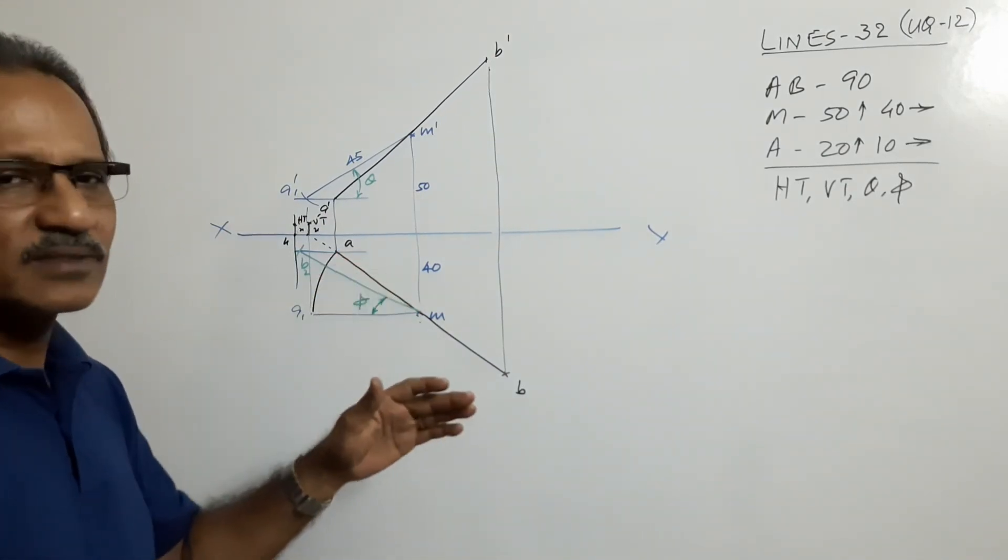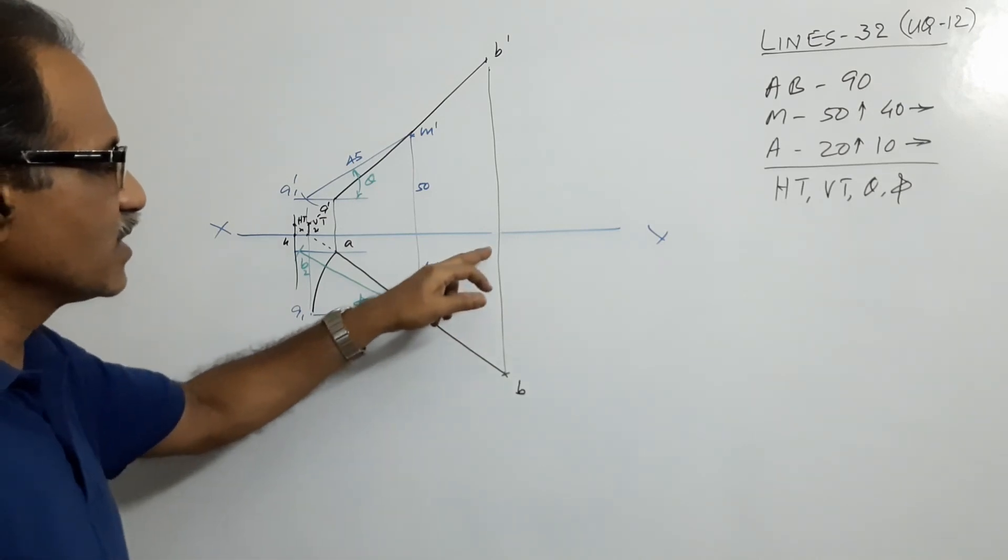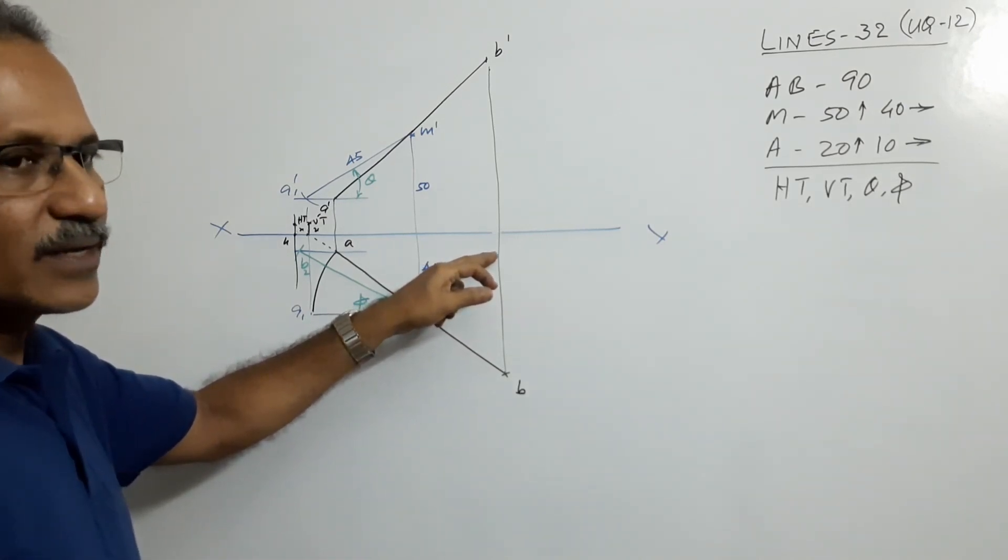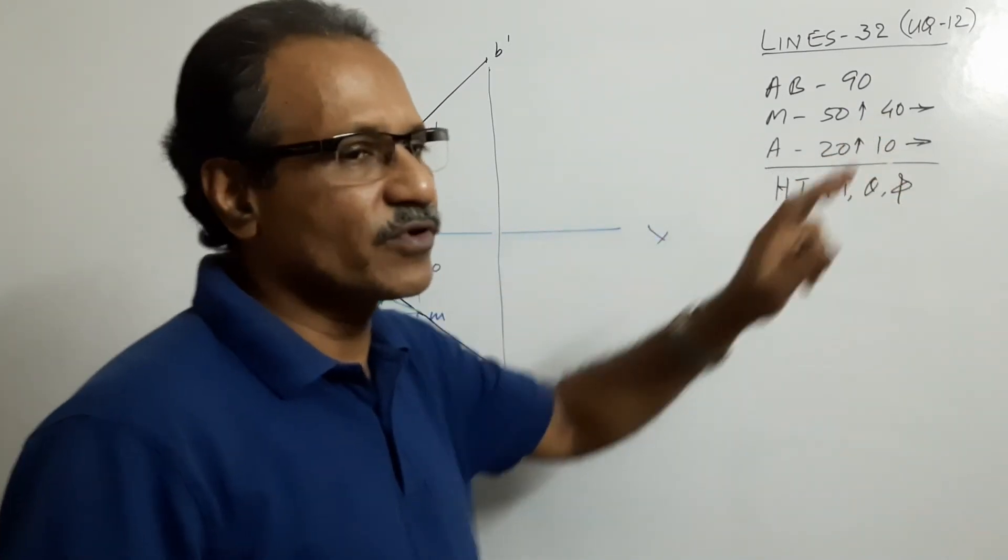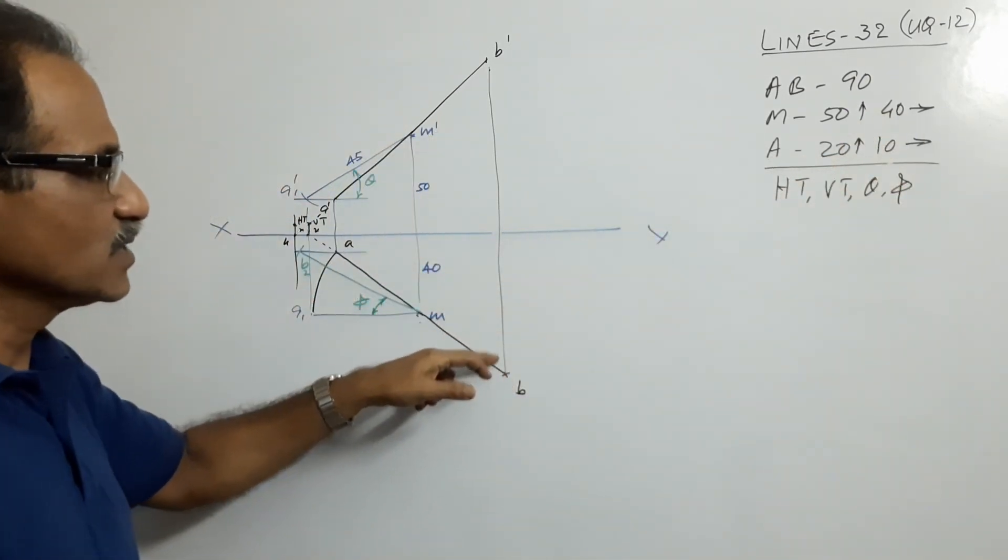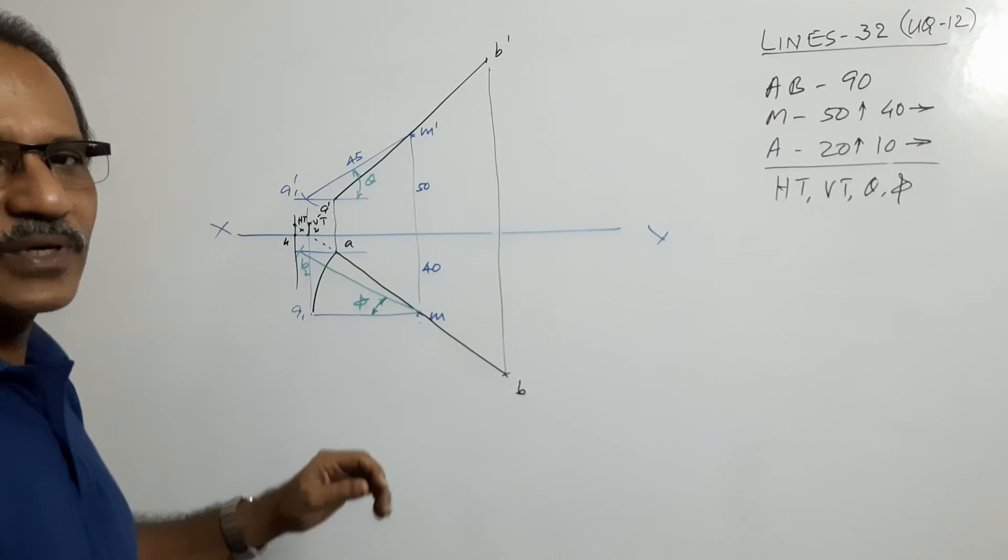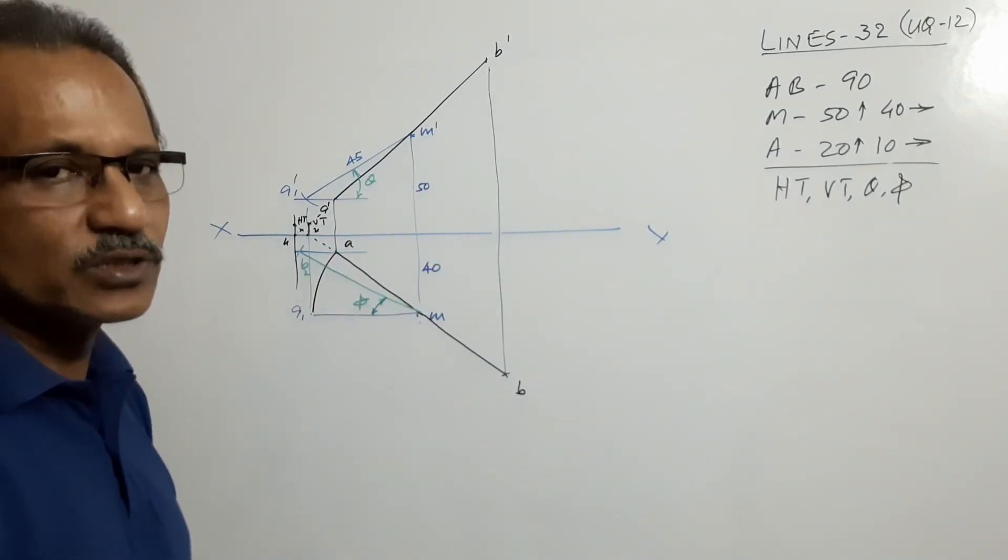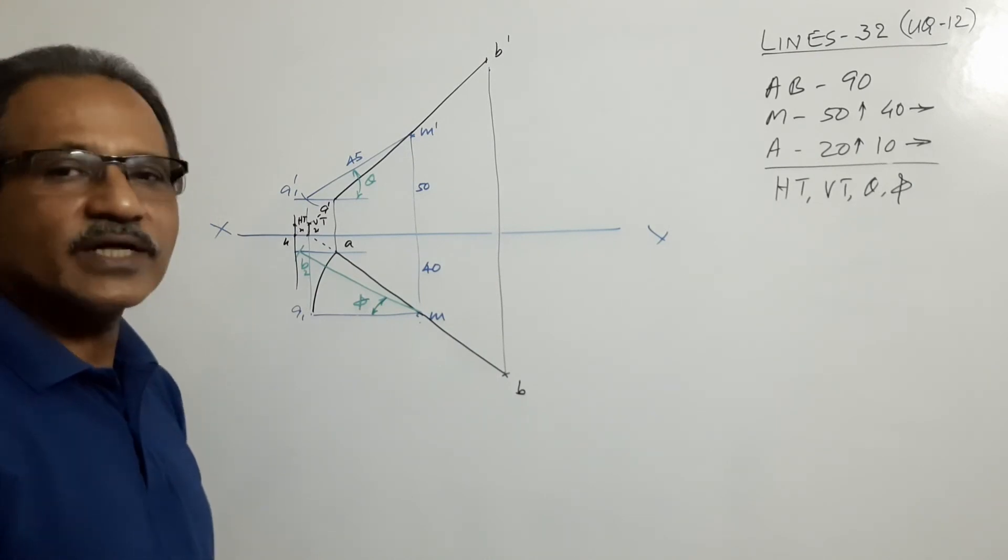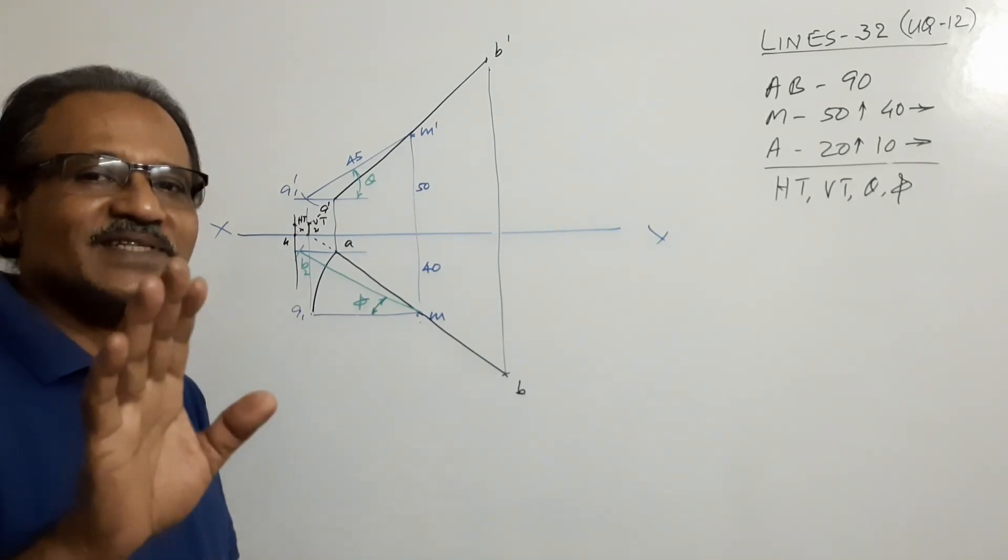Unfortunately, this problem is worked out in some of the books wrongly. They have taken B 10mm in front of VP. A is 10mm in front of VP. The author has taken B 10mm in front of VP, actually A is 10mm in front of VP. It's wrongly worked out in the textbook. Okay, thank you.